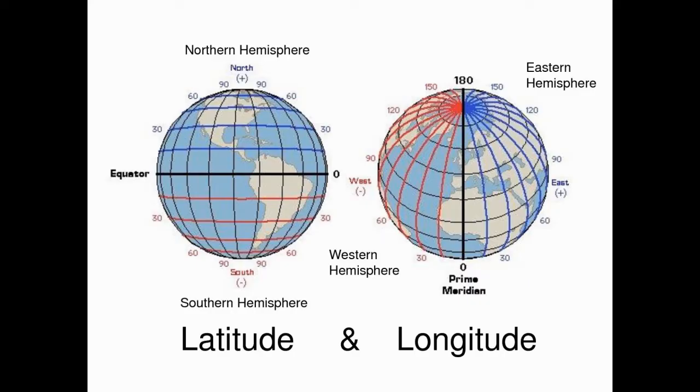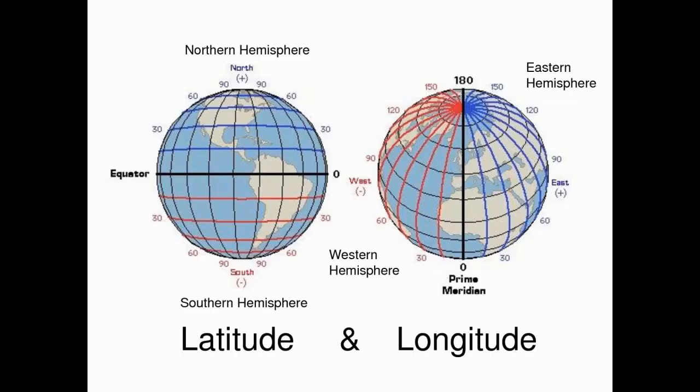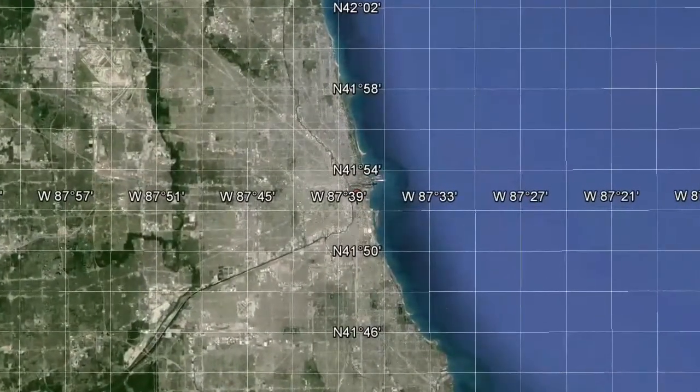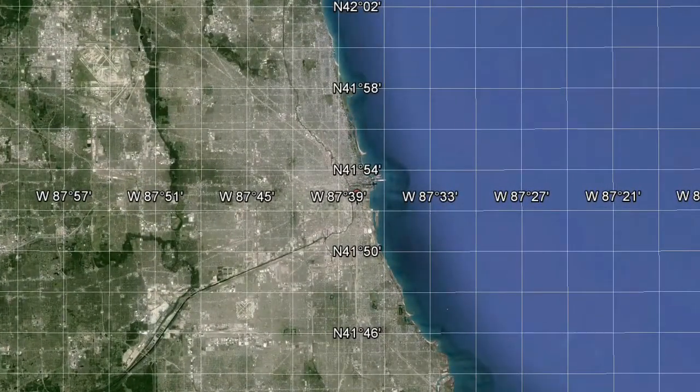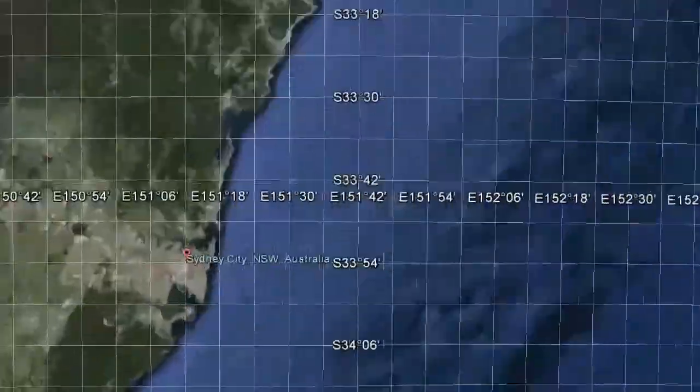Latitude measures degrees how far north or south of the equator a place lies. The equator has a latitude of zero degrees. The north and south poles have a latitude of 90 degrees north and 90 degrees south, respectively. Chicago has a latitude of 41.8 degrees north. Sydney, Australia has a latitude of 34 degrees south.